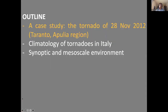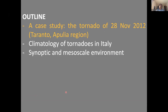This is the outline. I decided to organize my presentation providing an overview of the research I did on this topic in the last five or six years, following a chronological order. I will start with a case study, a very intense event that affected southeastern Italy. Then I will move to describe an updated climatology of tornadoes in Italy. And finally, I will describe the synoptic and mesoscale environment where they typically form and develop in different regions, which is of interest not only for Italy but also makes a distinction between more continental and peninsular Mediterranean countries.